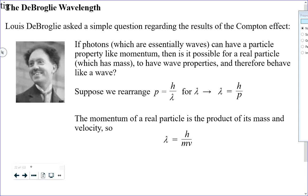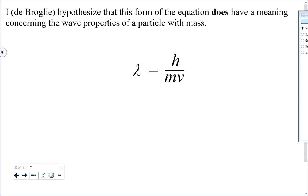Alberta Education has gotten into the habit of giving students the formula on diploma exams when they need to use it — I don't know why they don't just put it on the formula sheet. But anyway, it's not there. This is the de Broglie wave hypothesis: a generalized prediction that real particles, particles with mass, do have a wavelength that can be calculated with lambda equals h over MV.